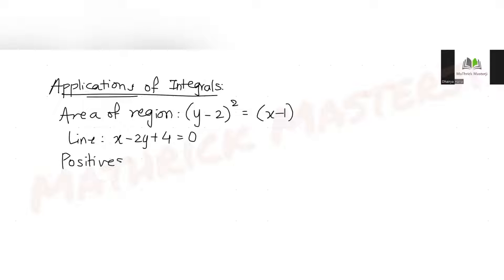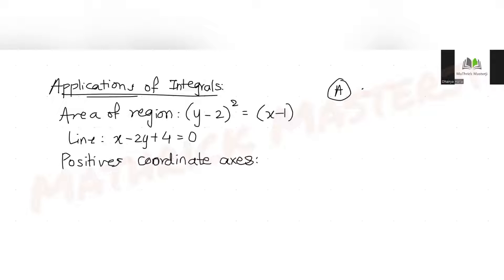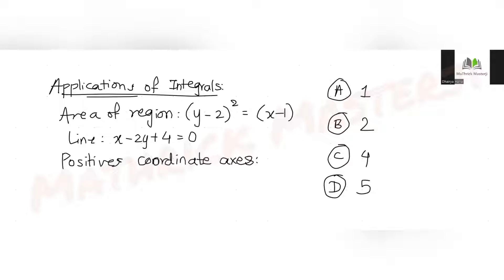We have to figure out the area of the region defined by these three conditions. The answer choices are: option A = 1, option B = 2, option C = 4, and option D = 5.